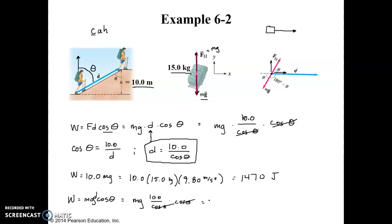And we're left with the exact same amount, 10.0 mg, which is 1470 joules. It's just that the work is going in the opposite direction, the work due to gravity.